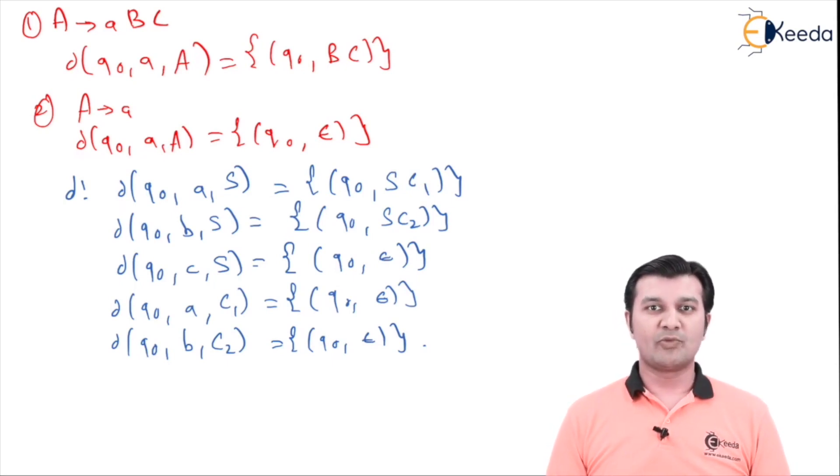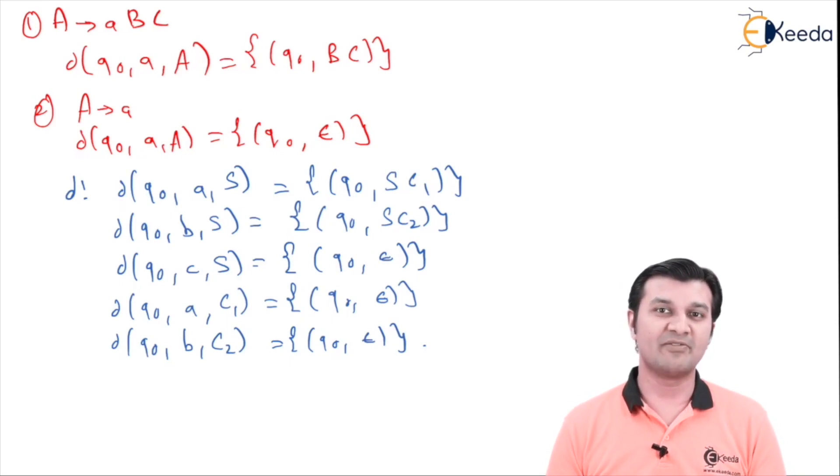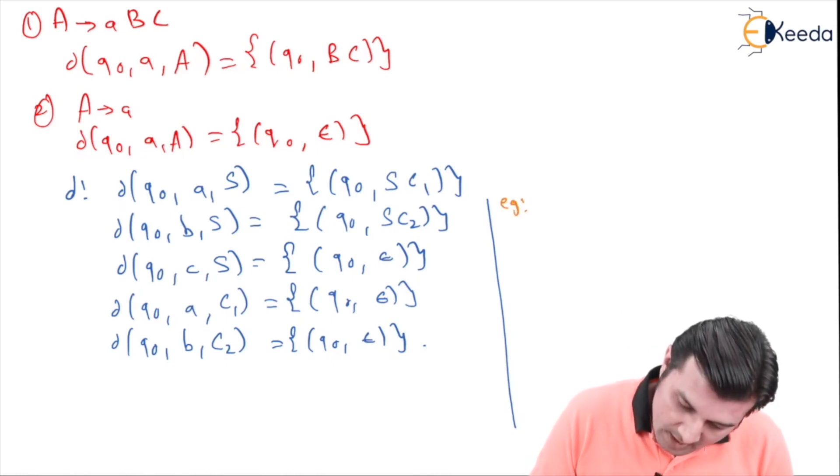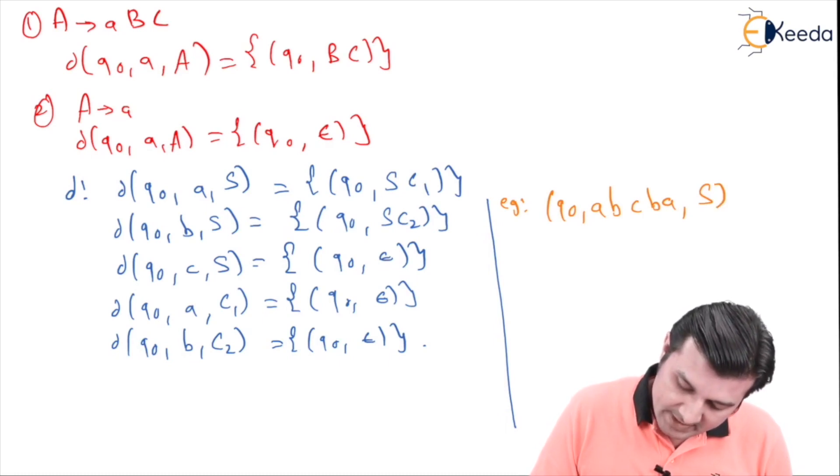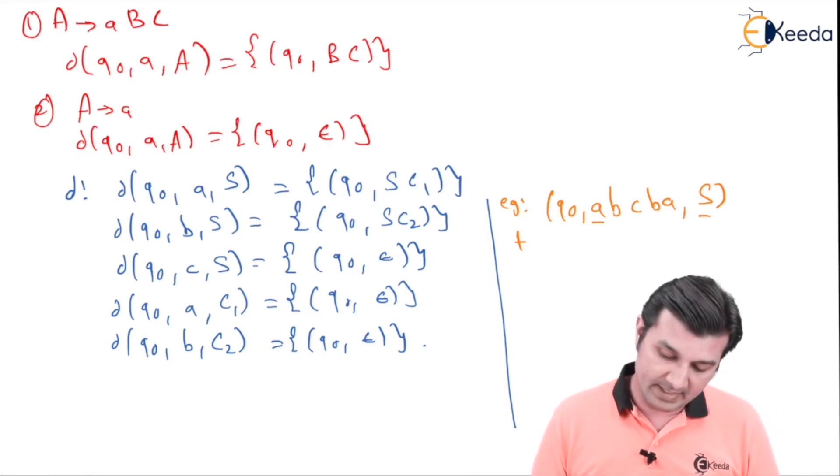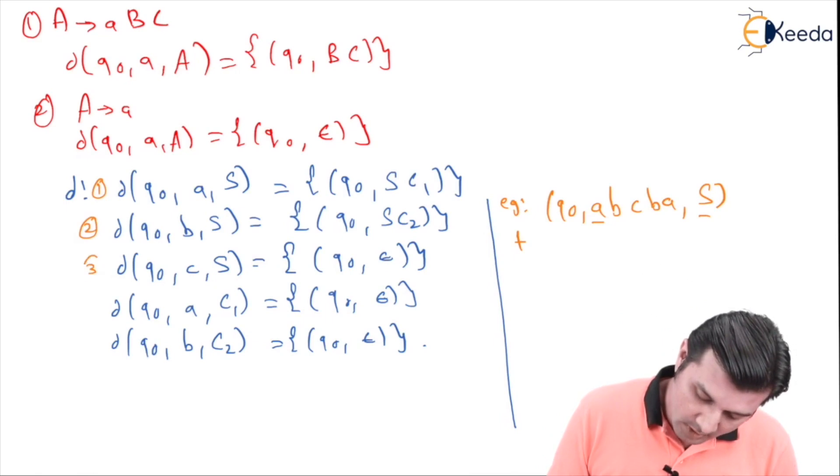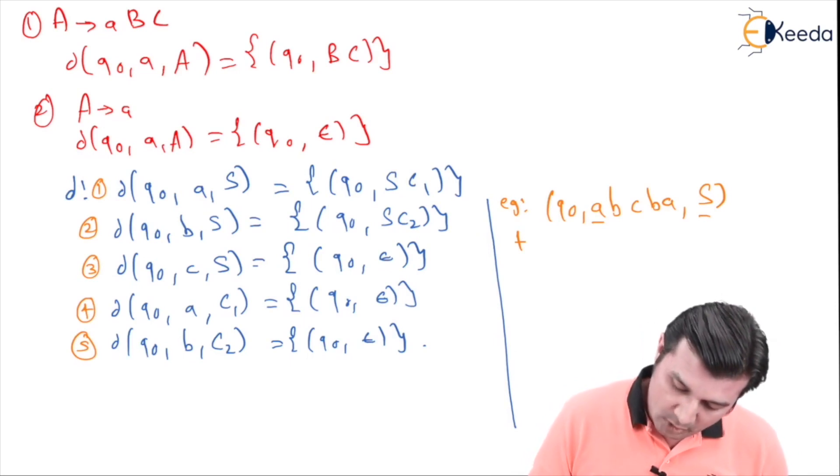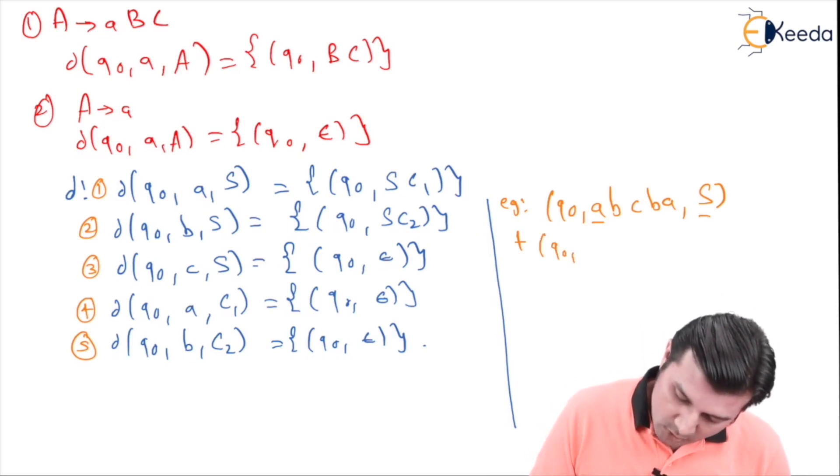There are definitely going to be a lot of questions in your mind as to how this thing is actually going to work, so here comes the example for you to verify whether the machine is working fine. So maybe I say, for example, I am in state q0, input is a b c b a, and stack top is S.